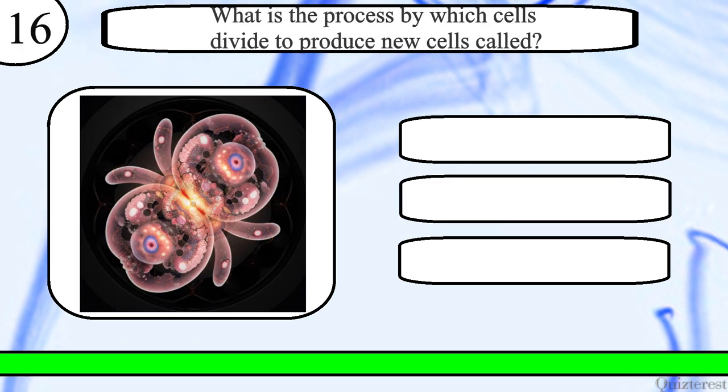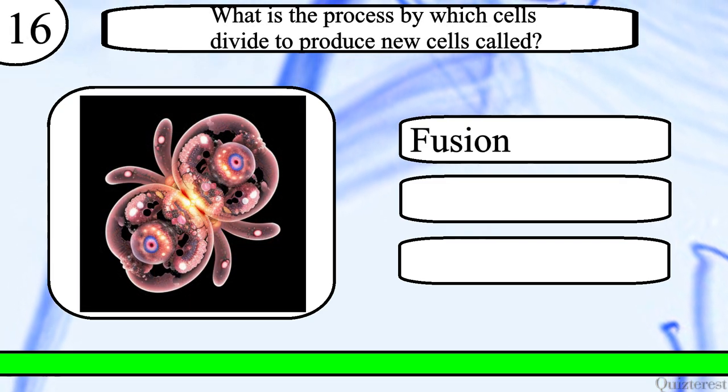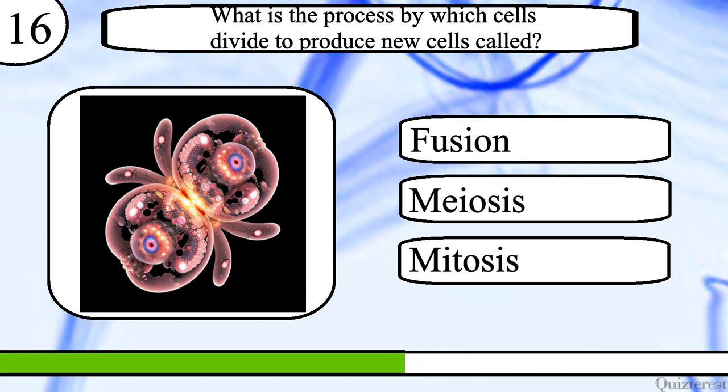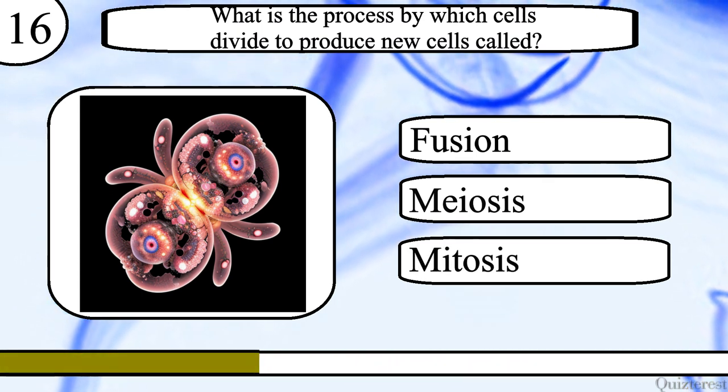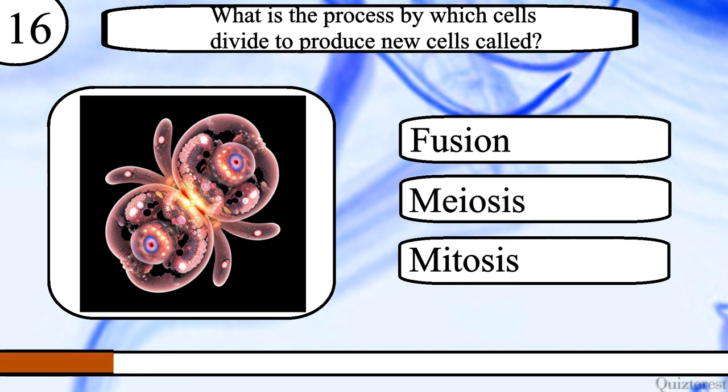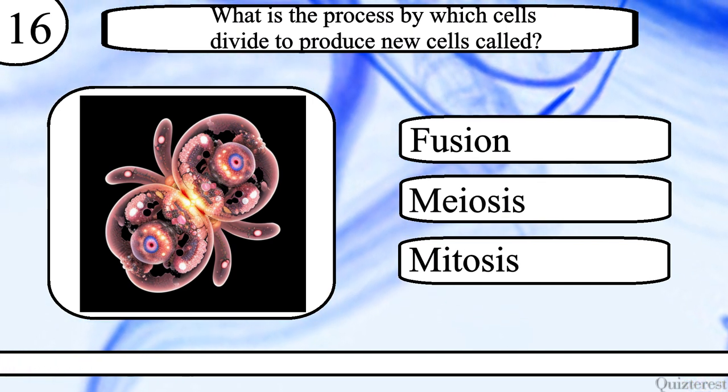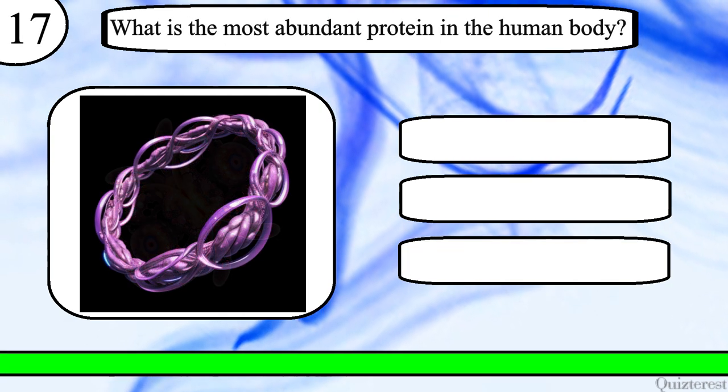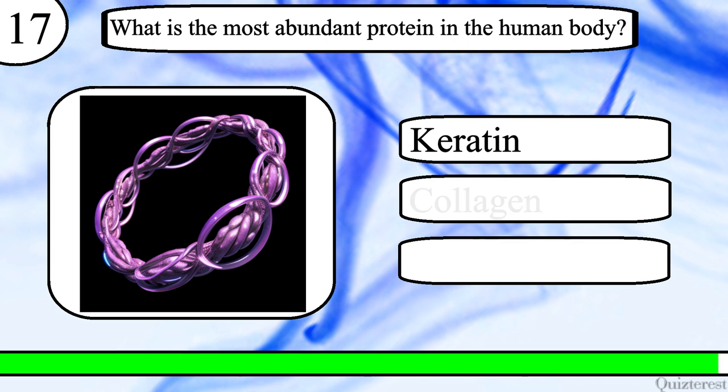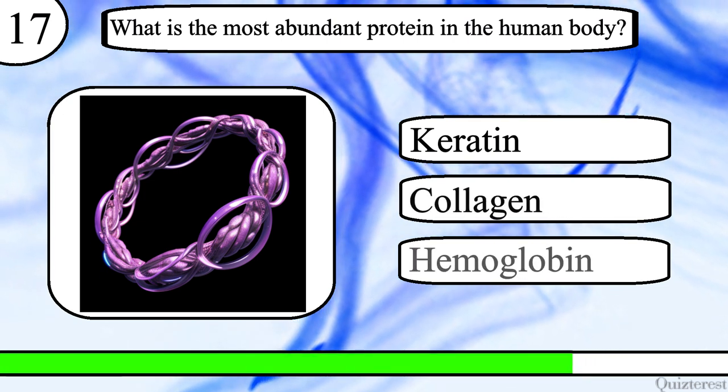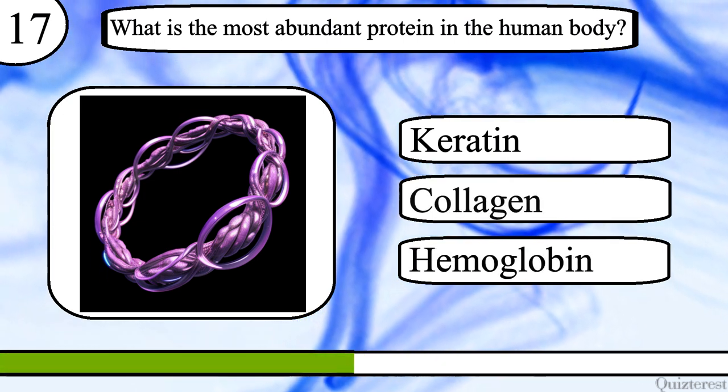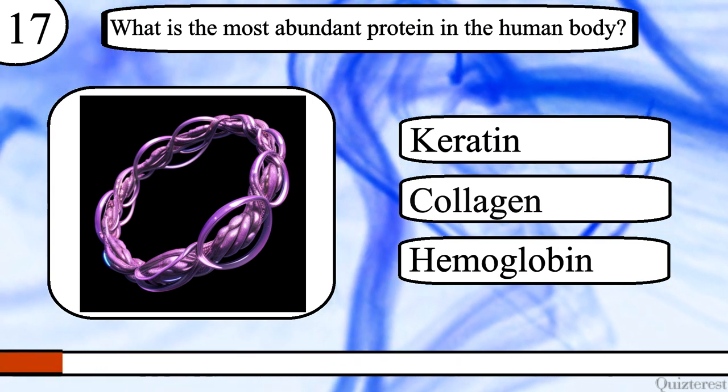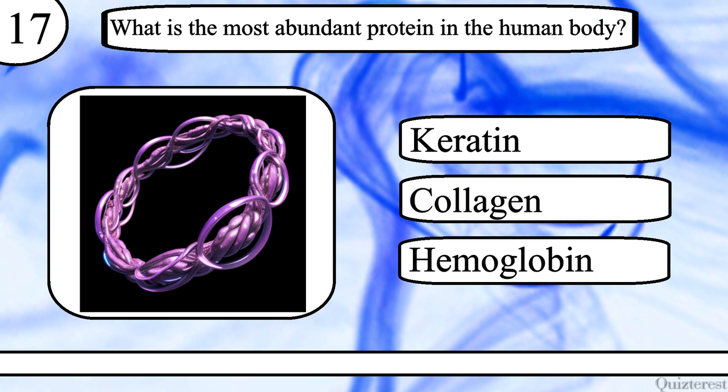Question 16. What is the process by which cells divide to produce new cells called? Fusion, meiosis or mitosis? The correct answer is mitosis. Question 17. What is the most abundant protein in the human body? Keratin, collagen or hemoglobin? The correct answer is collagen.